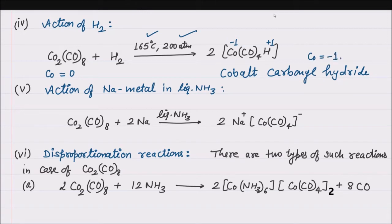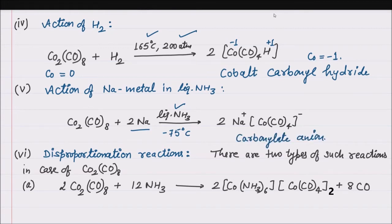Action of sodium metal in liquid ammonia: when Co2(CO)8 reacts with sodium metal in liquid ammonia below -75 degrees Celsius — keep in mind, below -75 degrees Celsius — it gets reduced to carbonyl hydride, where cobalt is in the -1 oxidation state, changing from 0 to -1.